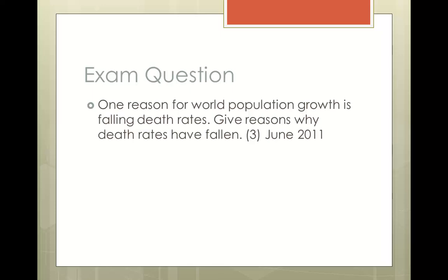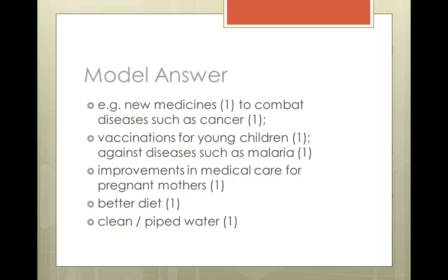You should have come up with your answer to that question. On the next slide we'll look at a model answer directly from the Mark Scheme. One reason why you could control death rates is the introduction of immune medicines — that would have got you one mark. You could have got a second mark by developing that with an example, such as to combat diseases like cancer. Another example was vaccinations for young children against diseases such as malaria. It's just a question of developing your ideas. You could just give three simple ideas: new medicines, improvements in medical care for pregnant mothers, better diet, clean piped water. If you feel you've written three ideas but you're not sure of one, add a fourth — it's not going to do any harm. This ends today's screencast.